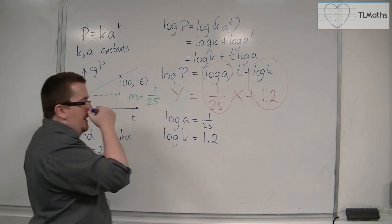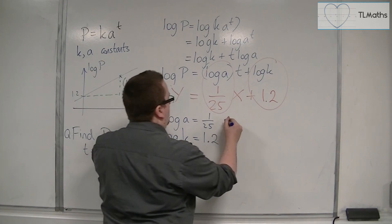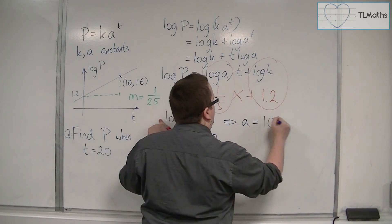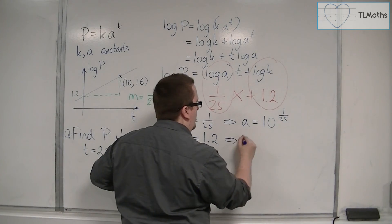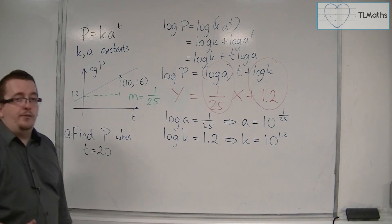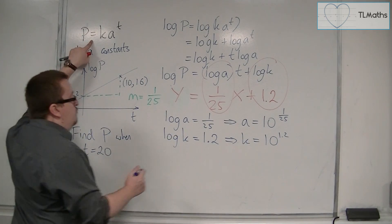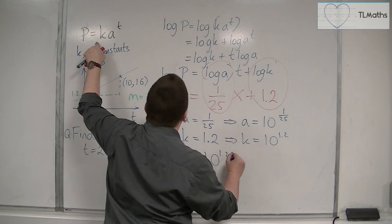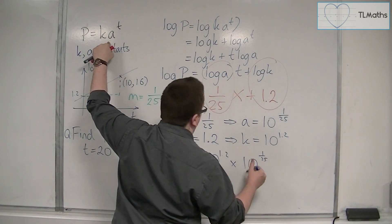So, if I then rewrite these two equations in exponential form, that means that A is 10 to the 1 over 25, and here K is 10 to the 1.2. I now have values for A and K, and I can put them back into the original equation, P is equal to K times A to the T.